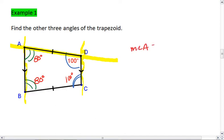Thus measure of angle A is 80 degrees, measure of angle B is 80 degrees, and the measure of angle C is 100 degrees.